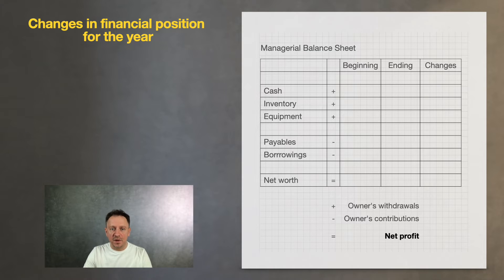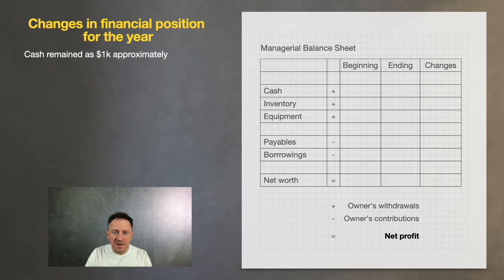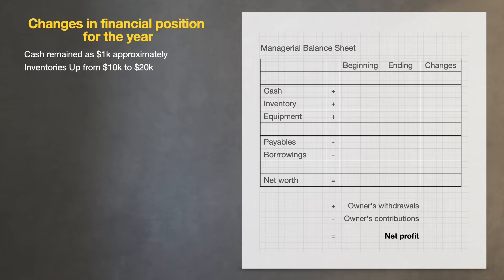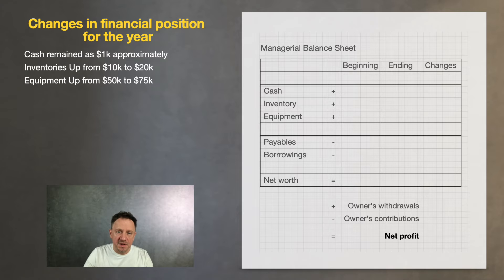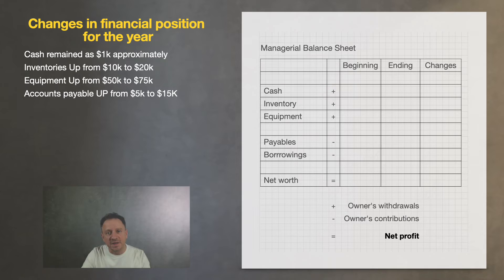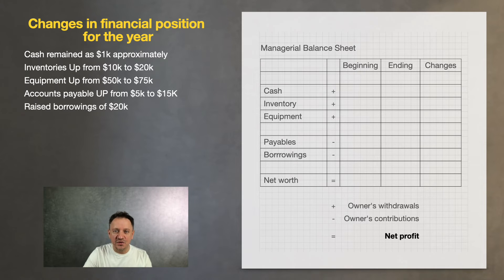All we have are the following facts for the year. His cash remained at the same minimum level of approximately 1k. Inventories increased from 10k to 20k. Equipment went from 50k to 75k. His debts increased as well — all his payables from 5k to 15k. He also raised borrowings of 20k.